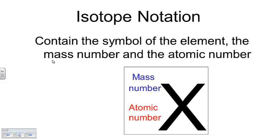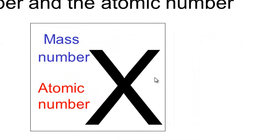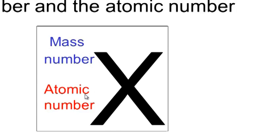When you're doing something called isotope notation, it contains the symbol of the element — that's what this X represents. It's just a representative of a particular element, not any element in particular. You'll see a number written up and to the left and another number written below it, down and to the left of the symbol. Those two numbers are the mass number and the atomic number, respectively.